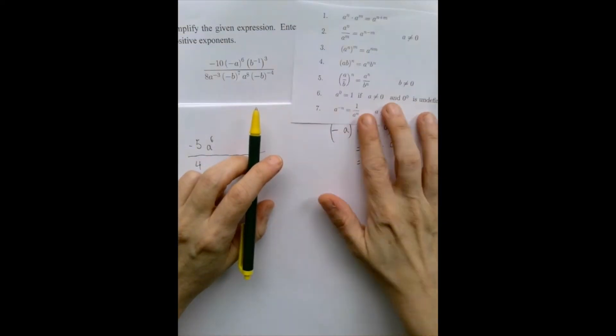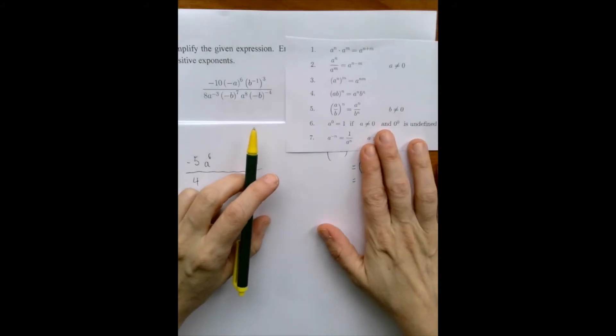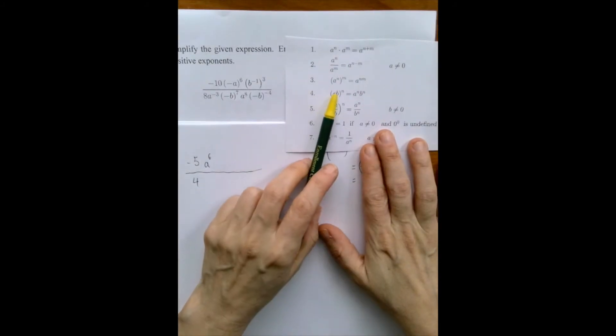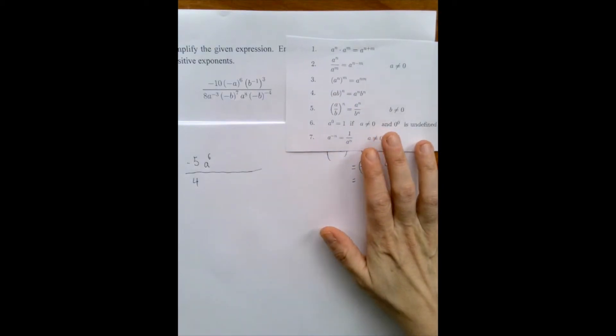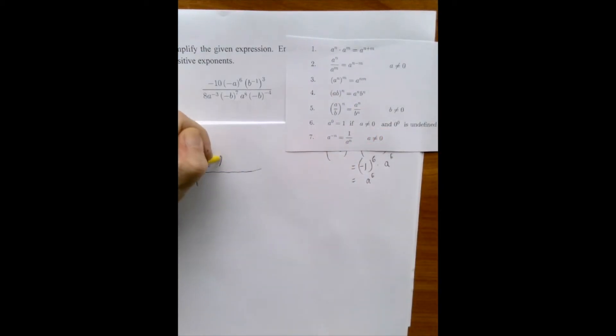Now, with this one, we're going to apply the third rule, which is about repeated exponentiation. Then we can multiply the exponents. So we're going to have b to the negative 3. So we're done with the numerator.